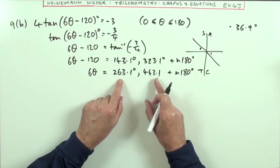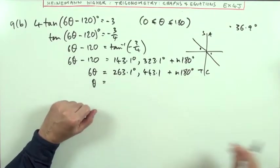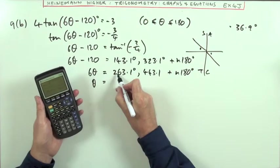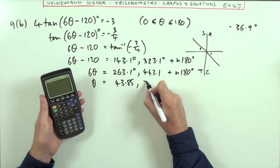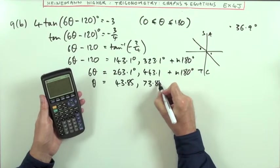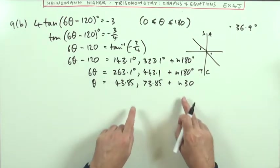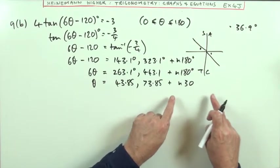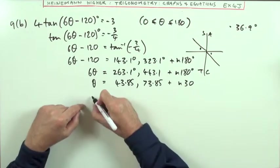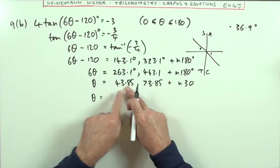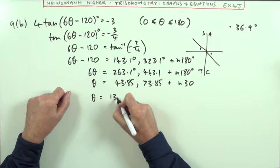Dividing by six gives 43.85 and 73.85, plus n30. I can add or subtract as many 30s as needed until I reach the limit. Taking 30 off of the first gives 13.85, then I've got 43.85 and 73.85.